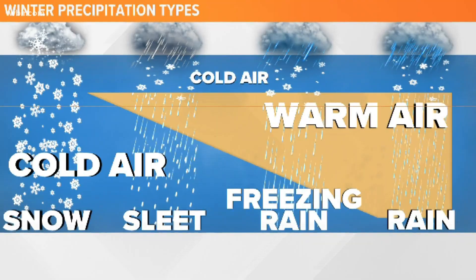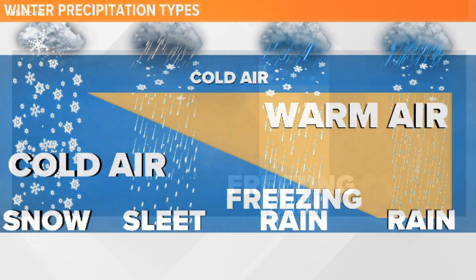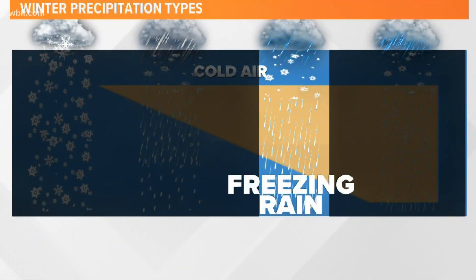All year we cover all different types of precipitation, whether it be snow, sleet, freezing rain, or even in the form of rain. But what exactly does freezing rain look like in the atmosphere?